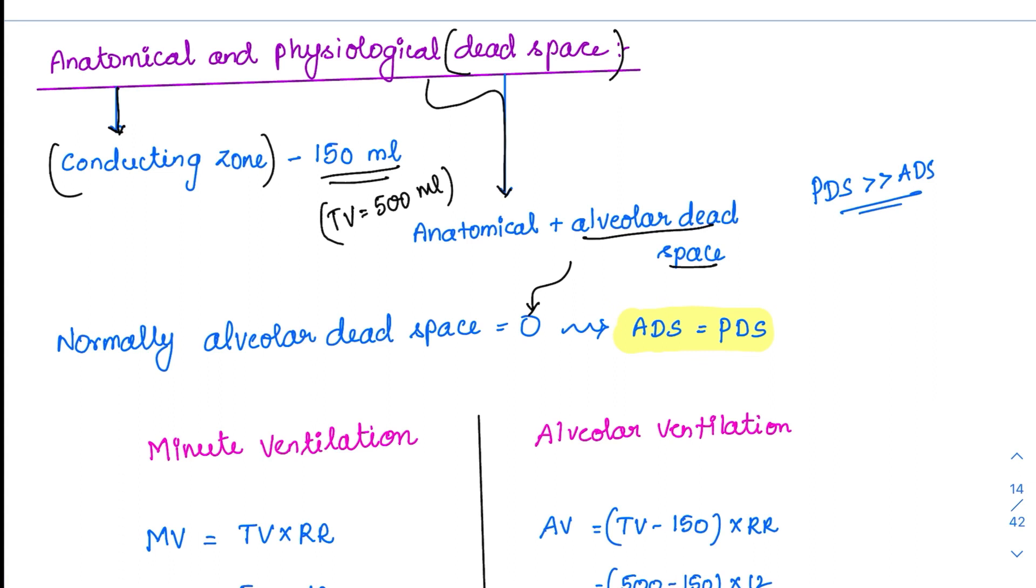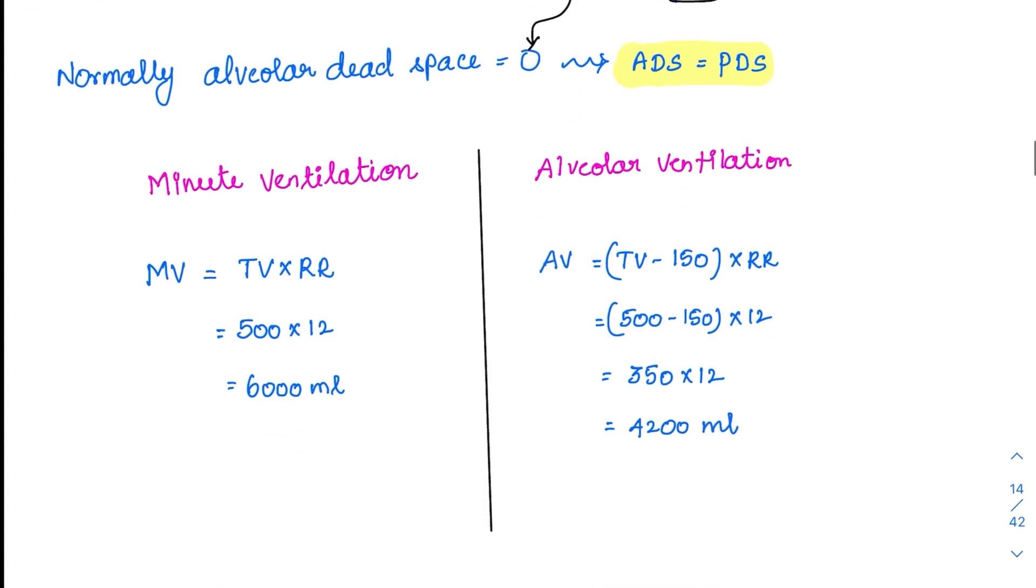So with this, they can ask you two MCQs: minute ventilation and alveolar ventilation. Please pay attention to the question. Sometimes they will ask you to calculate the minute ventilation. I have seen all the students making mistakes here, but this is such an easy question. What is minute ventilation? Minute ventilation means in one minute, whatever ventilation is happening in the entire lung. So it is tidal volume times respiratory rate. Tidal volume is 500 and respiratory rate is 12. So the minute ventilation will be 6000 ml.